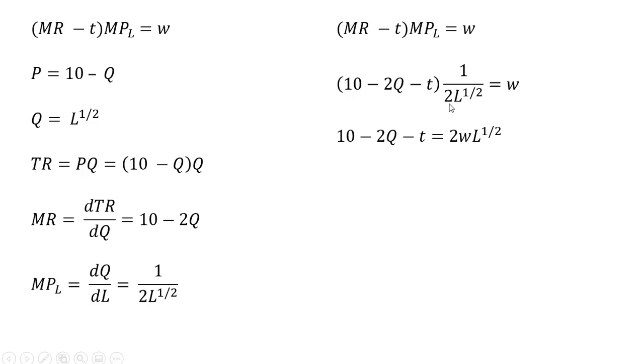Multiplying both sides through by 2L raised to the one-half power. Now we're going to take Q and set it equal to L to the one-half, making a substitution. Q is the square root of L.